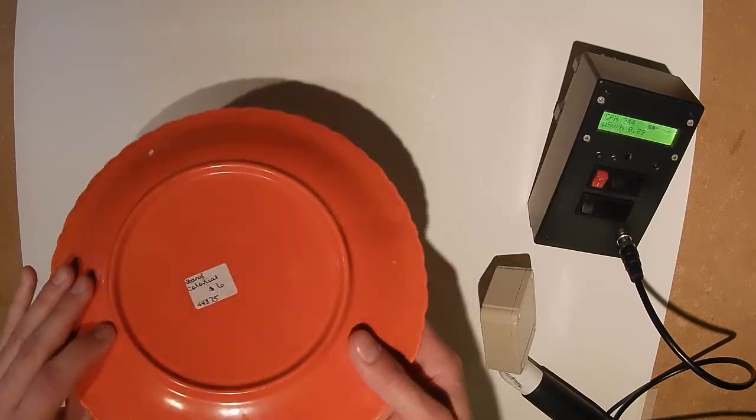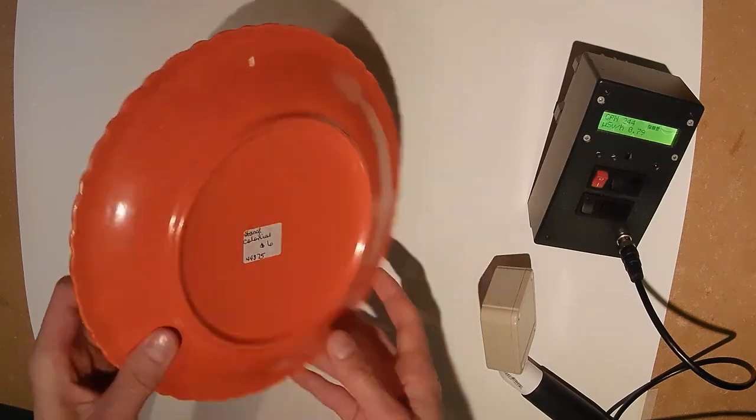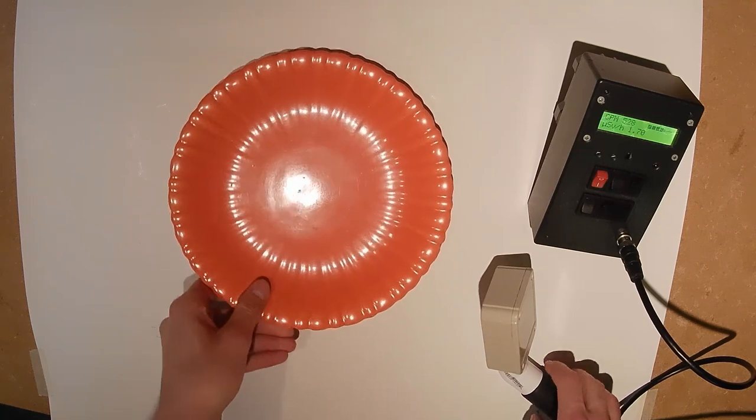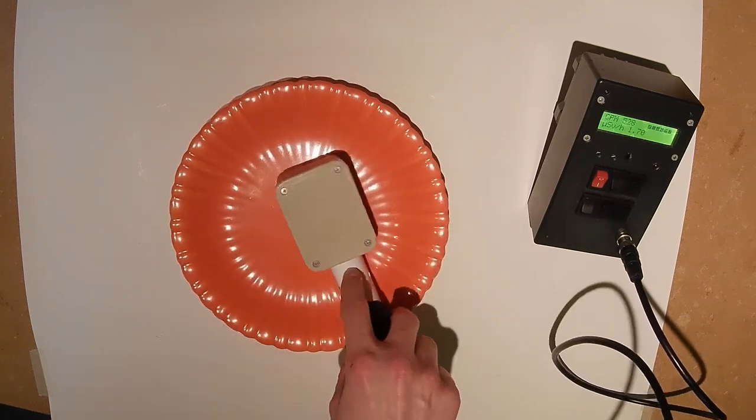Next up is this orange plate from the Colonial line made by the Stangle Pottery Company. It clocks in at roughly 7,000 counts per minute.